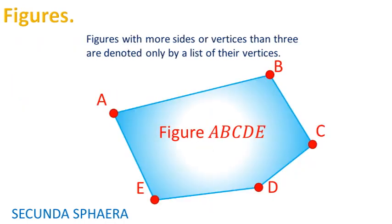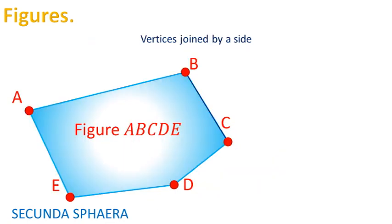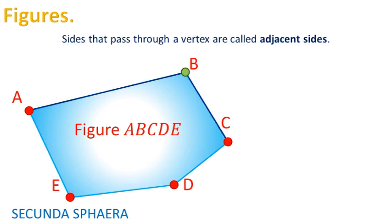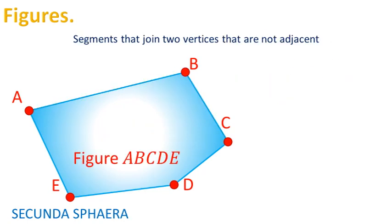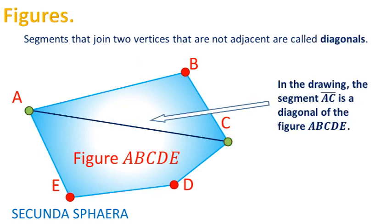Figures with more sides or vertices than three are denoted only by a list of their vertices. There will not be used any special symbol to address them. Vertices in a figure that are joined by a side are called adjacent vertices. Sides that pass through a common vertex are called adjacent sides. Segments that join two vertices that are not adjacent are called diagonals.